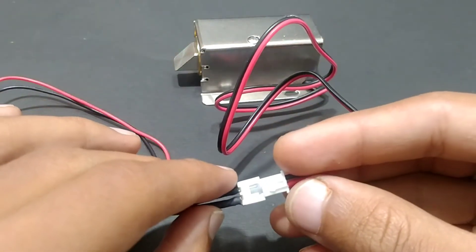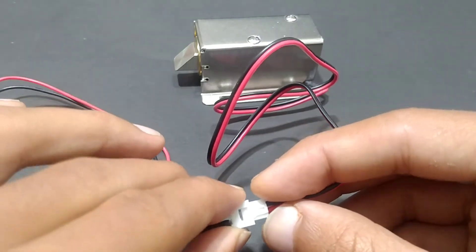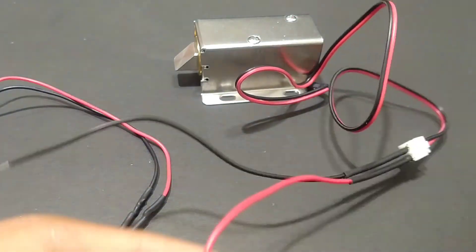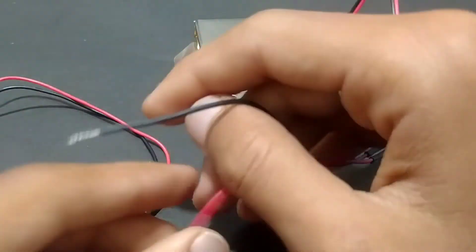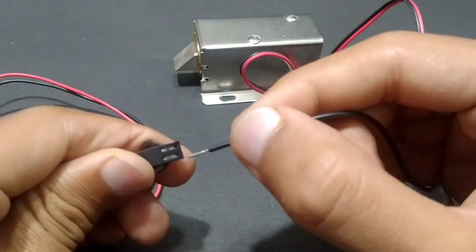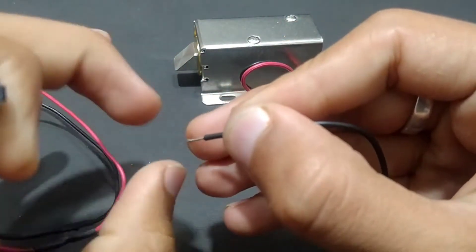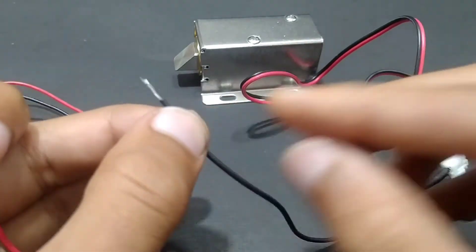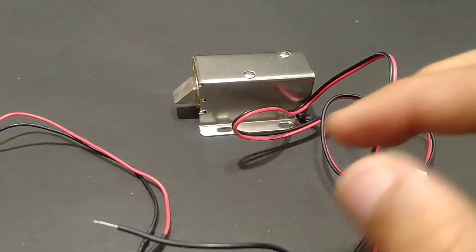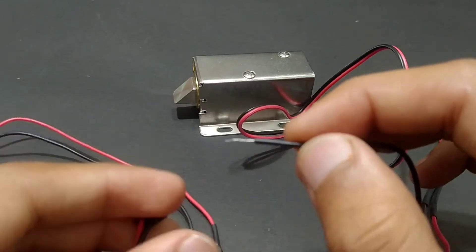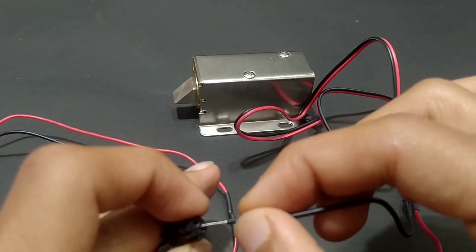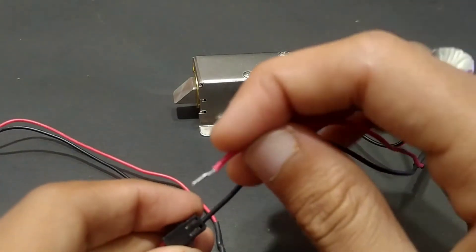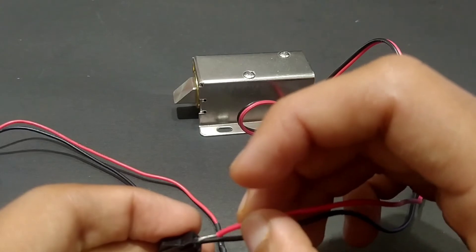Now connect this to the separate connector. Connect these two wires to the battery. Now connect this to the battery and see how it works.